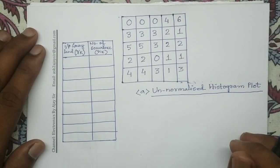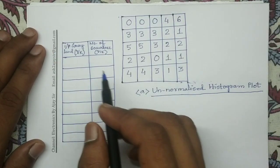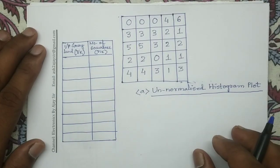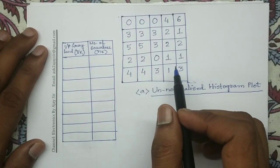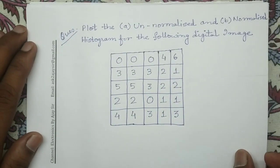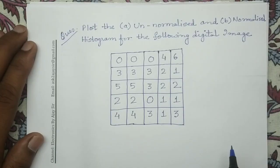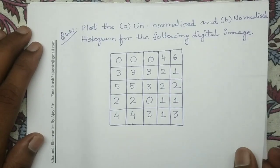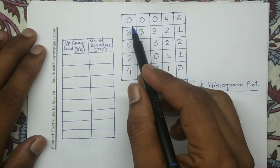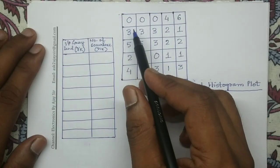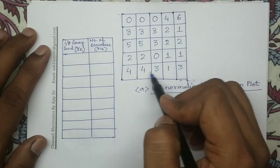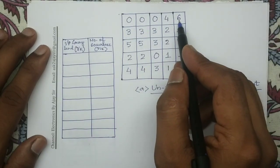Now in order to plot the unnormalized histogram plot, we have to vary RK from 0 to L-1. So for this we have to compute the value of L. Since in this question the number of bits is not given to us, in order to compute the value of L we will target the maximum intensity value in this given digital input image. The maximum intensity value is equal to 6.